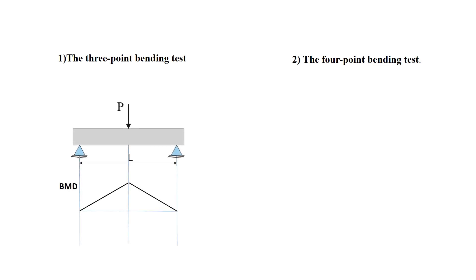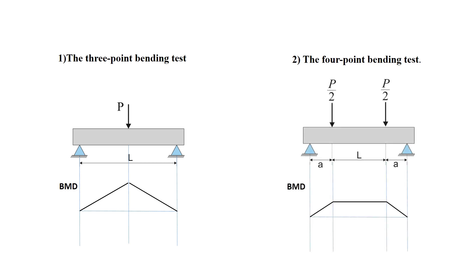In the three-point bending test, a concentrated load P is applied at the mid-span of the beam. In the four-point bending test, two half loads are applied from equal distances from the supports. This will cause a constant bending moment between these two loads. Therefore, the four-point bending test provides better material characteristics.